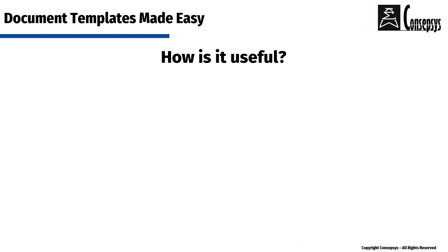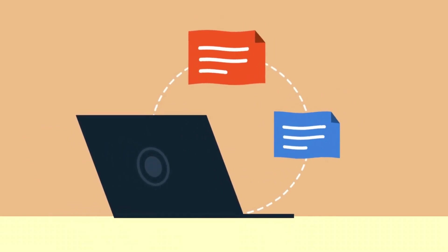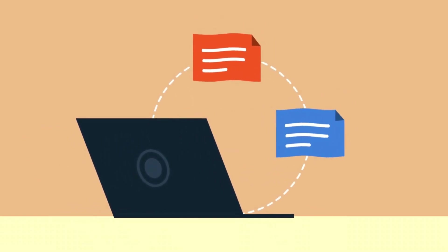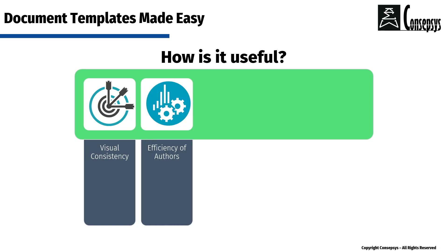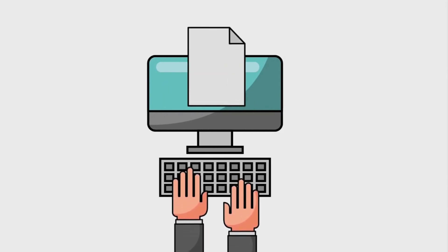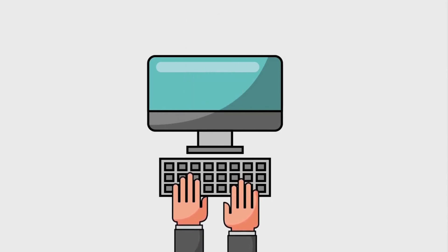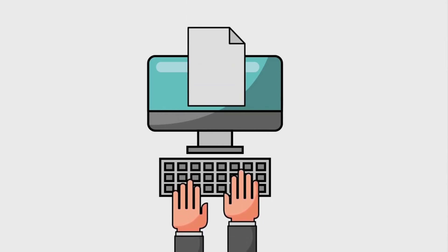So how are templates useful? First, they offer visual consistency. All documents from the same company, project, or department have the same look and feel, and they comply with the company's guidelines. They improve greatly the efficiency of document authors — they don't have to start from a blank page or take decisions on how to format their documents. They know in advance how the document is supposed to look and what information will be required.